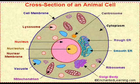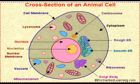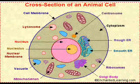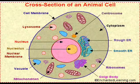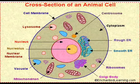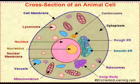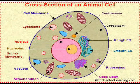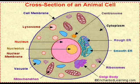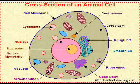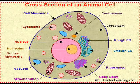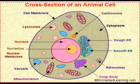The nucleolus is the person who holds all the room keys in the hotel. It stores ribonucleic acid, or RNA for short. This RNA helps supply the cell with proteins. The nuclear membrane surrounds both the nucleus and nucleolus and keeps them safe, like the hotel manager's personal bodyguard.